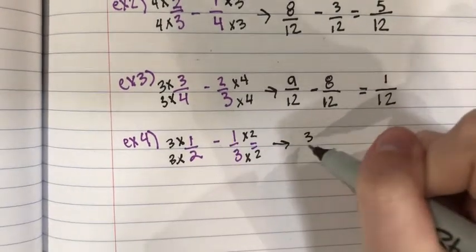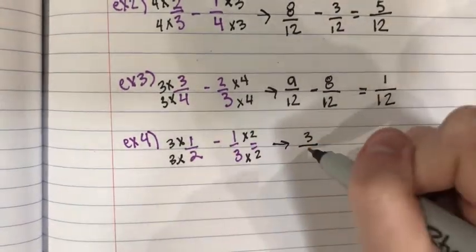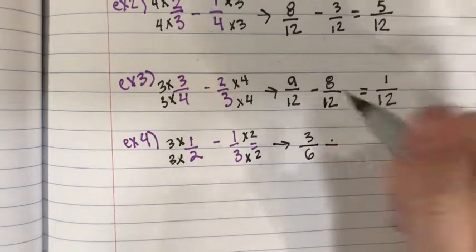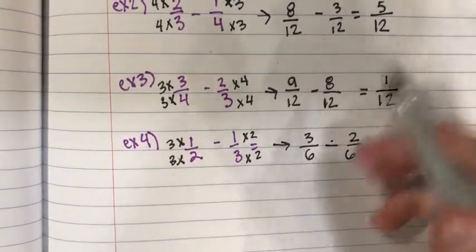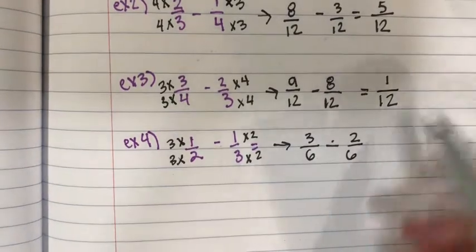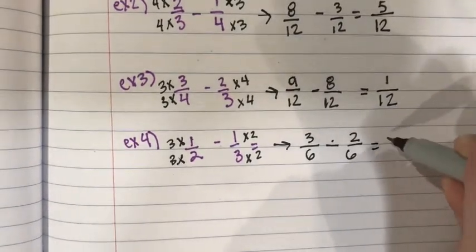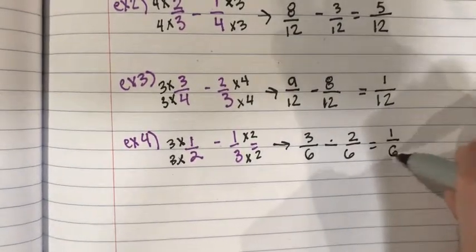So 3 times 1 is 3, 3 times 2 is 6 minus 1 times 2 is 2 and 3 times 2 is 6. The same denominator subtract straight across giving you 1/6.